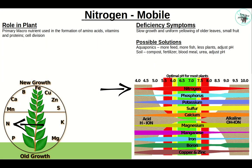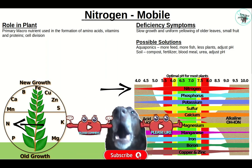Nitrogen is a mobile primary nutrient used in the formation of amino acids, vitamins, proteins, and cell wall division. Deficiency symptoms include slow growth and uniform yellowing of older leaves, small fruit. Possible solutions in aquaponics: feed more, add more fish, fewer plants, and make sure pH is adjusted properly. In soil: compost, fertilizer, blood meal, urea, and adjust pH. Anything below pH 6 or above pH 8 reduces nitrogen availability.